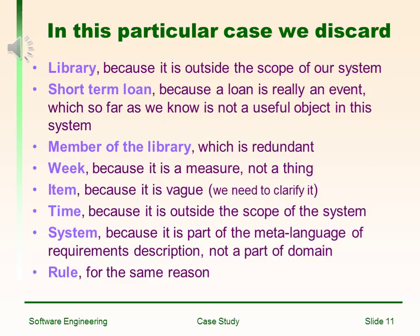In this particular case, we discard 'library' because it is outside the scope of our system. 'Short-term loan' because a loan is really an event, which as far as we know is not a useful object in this system. 'Member of the library' is redundant. 'Weak' because it is measured, not a thing. 'Item' because it is a buffer we need to clarify. 'Time' because it is outside the scope of the system. 'System' because it is part of the meta-language of the requirement description, not part of the domain. 'Rule' for the same reason.